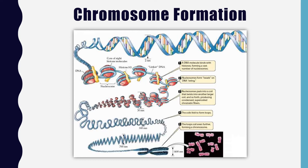To summarize: DNA wraps around histones, which are proteins. The beads-on-a-string structure is called a nucleosome. Nucleosomes coil up to form chromatin, which then coils into chromosomes. Remember that DNA usually exists as chromatin in the nucleus, and only organizes into chromosomes during DNA replication and cell division.